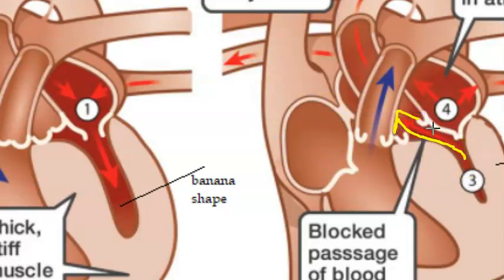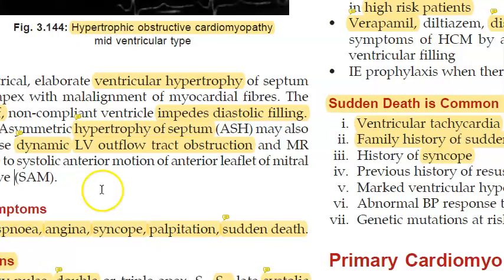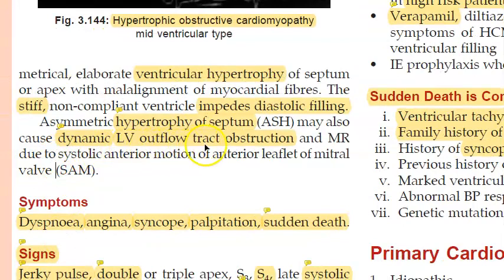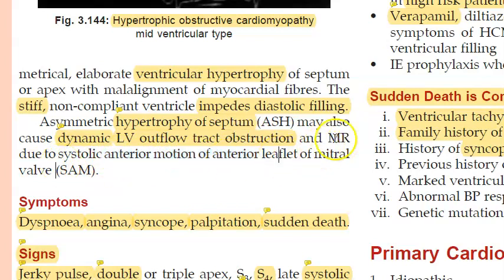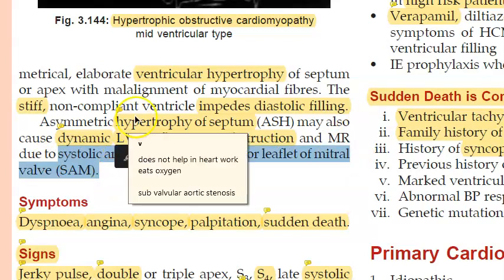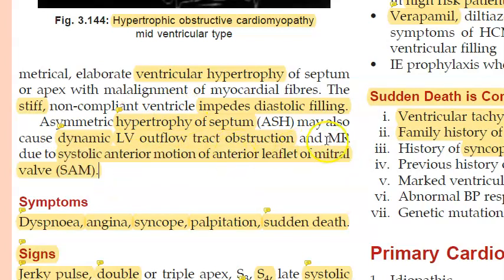There is dynamic LV outflow tract obstruction. During systole there is systolic anterior motion of the anterior leaflet of the mitral valve — SAM. There can be mitral regurgitation because the left ventricle is so small; if blood cannot exit through the aorta, it can regurgitate through the mitral valve.